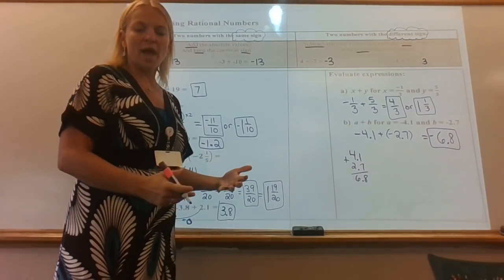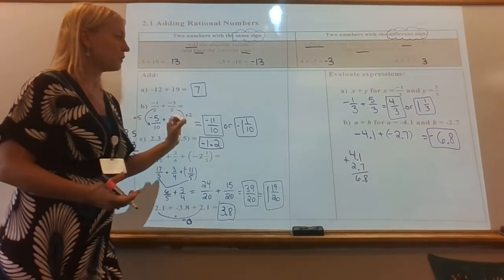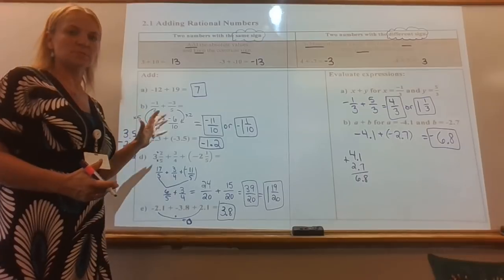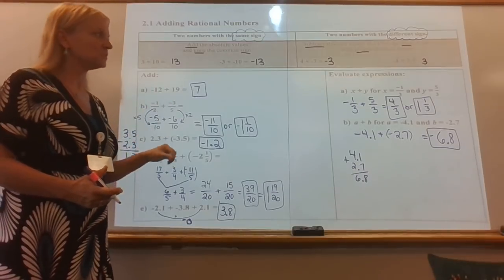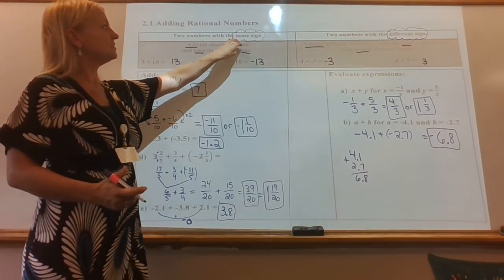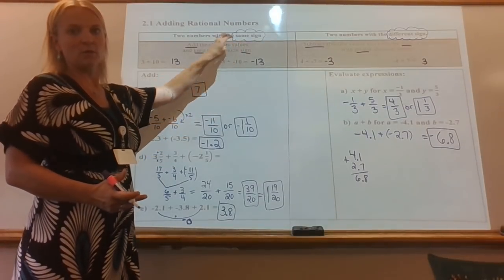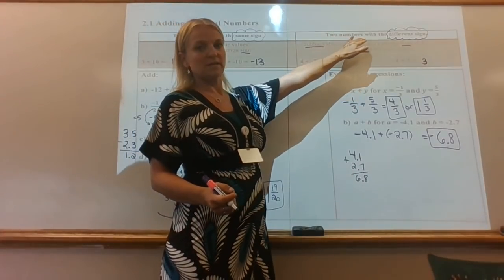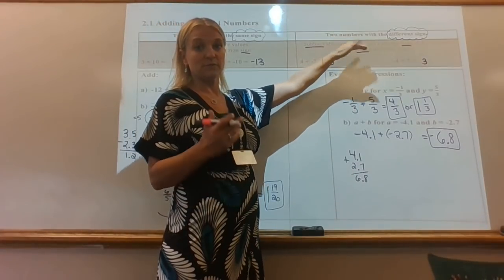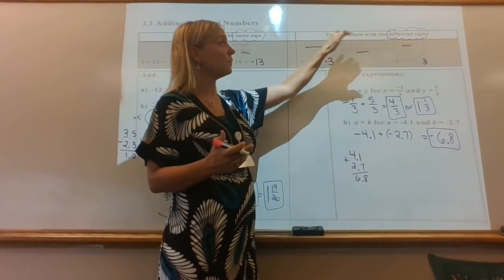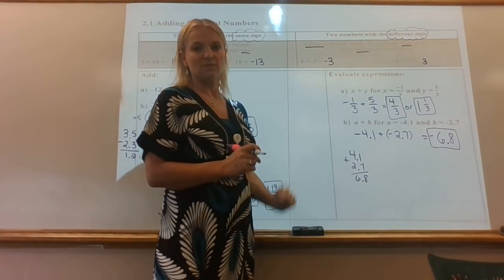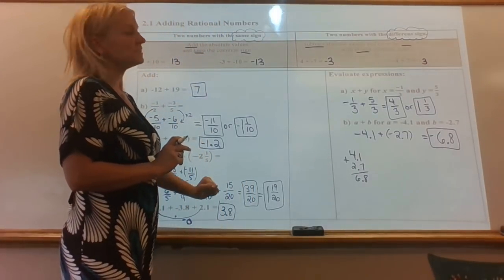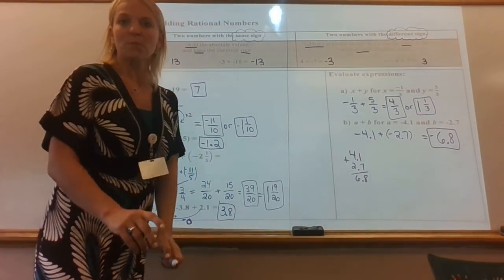So when you're adding negative numbers — whether they're fractions, decimals, or whole numbers — just remember these two things: Same sign: add and keep the sign. Different signs: they cancel out, so subtract and give the sign of whichever one is larger. Now you can do your 2.1 practice.